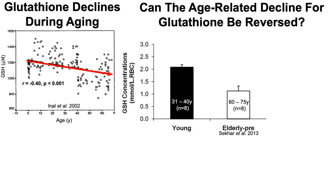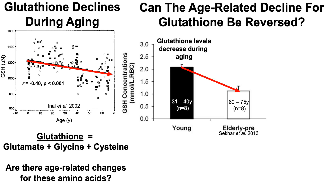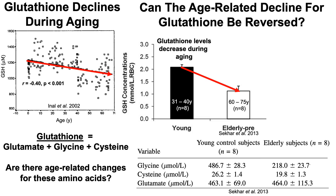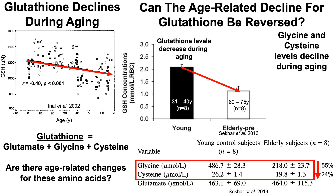Looking at a study comparing red blood cell glutathione levels, with young adults aged 31 to 40 years versus older adults aged 60 to 75 years — a very small study with 16 total subjects — glutathione levels are lower in older adults. When considering that glutathione is comprised of glutamate, cysteine, and glycine, are there age-related changes for these amino acids explaining the decline? There were no significant differences for glutamate (463 versus 464), but significant declines for glycine and cysteine in older adults: 55% lower glycine and 24% lower cysteine compared with young.